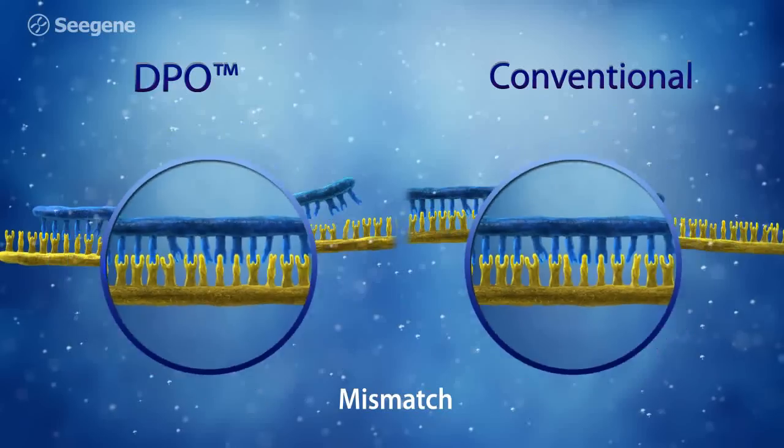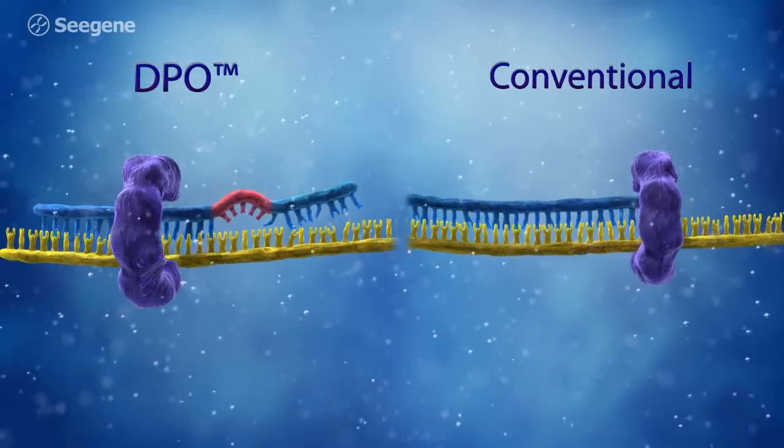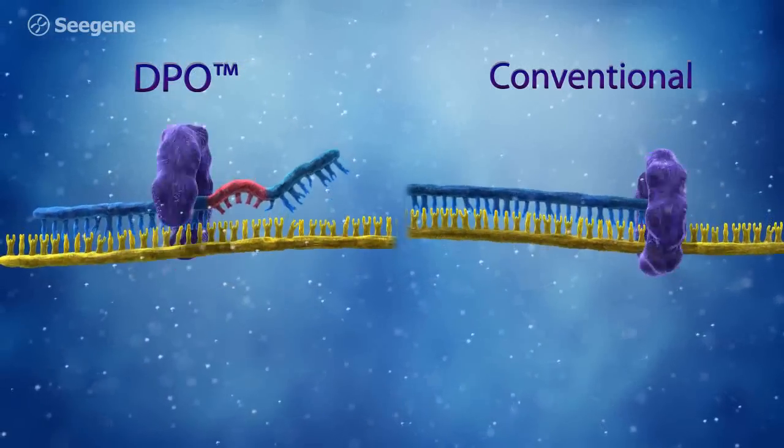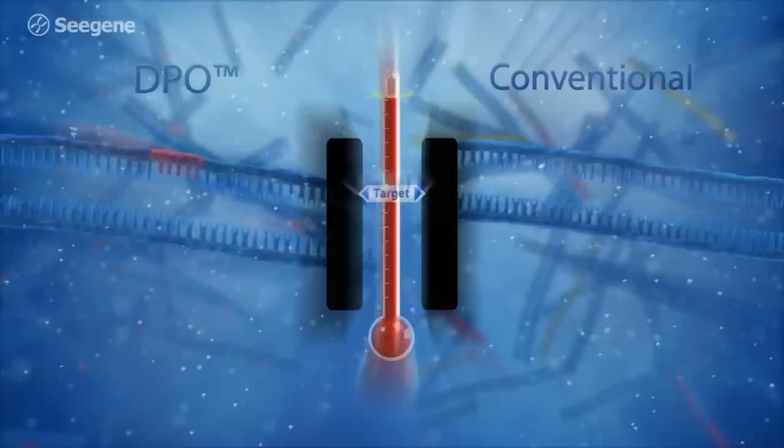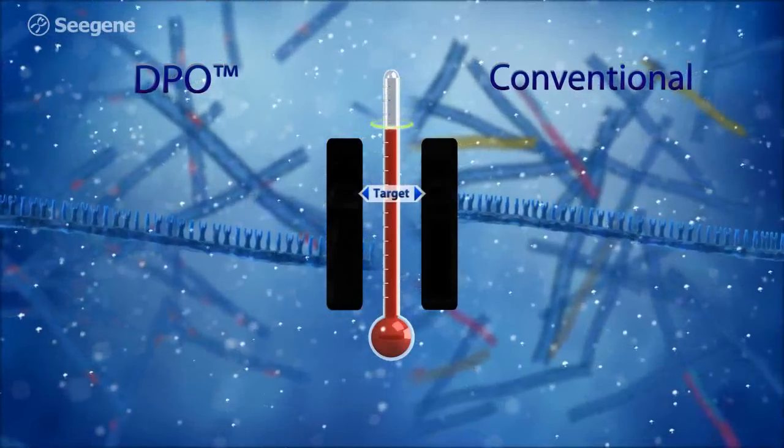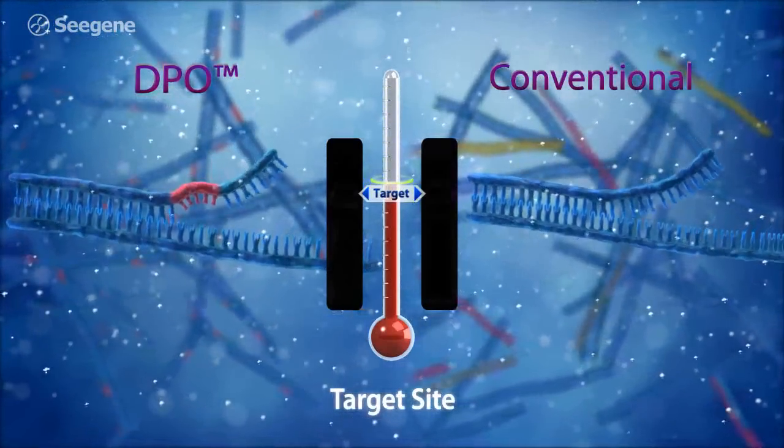In contrast, a conventional primer does not have a 3' portion providing discrimination as in a DPO primer. Therefore, when a conventional primer binds to a non-target sequence, amplification of the non-target DNA will occur.